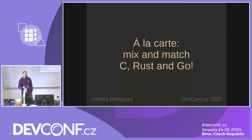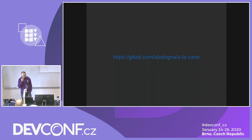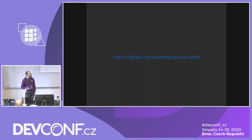Hello, everyone. We're going to talk about mixing these three languages: C, Rust, and Go. This is the URL to the repository where you can find the working code. My name is Andrea. I work for Red Hat in virtualization, and we have a lot of C code — like a lot of C code. So we've been thinking maybe we don't want that much C code, and let's play with other stuff.